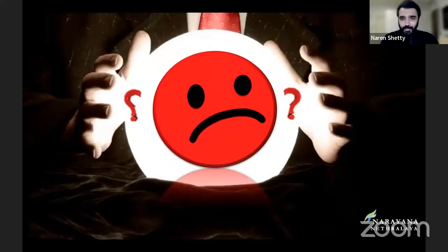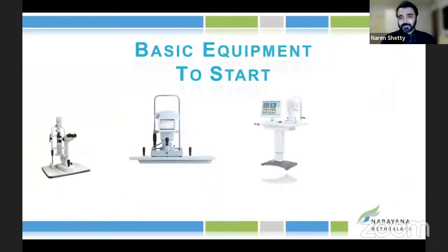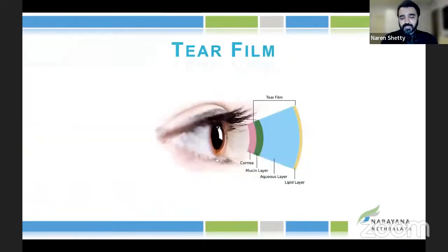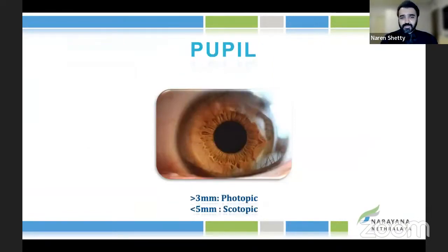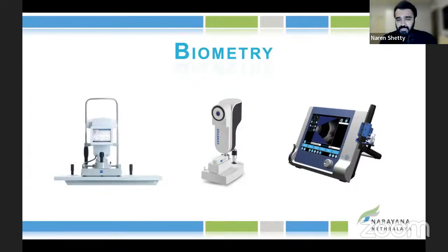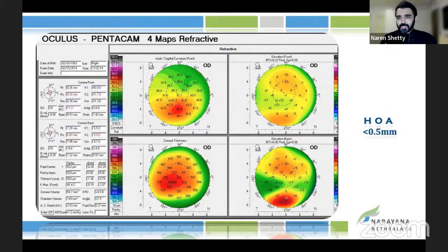For multifocal or trifocal lens patients — how do we turn 6-6 frowns into 6-6 smiles? First, prevent it by choosing the right patient. You need certain basic equipment: a good slit-lamp examination, always look at the tear film, look at the pupil size — keep it around 3mm to 5mm photopic and scotopic respectively. Keep angle alpha within 6 millimeters; if borderline, go for EDOF lenses — they're more forgiving. Always use optical biometry as it's not person-driven. Do topography and check the epithelium for inflammation or irregularity; regularize it before surgery.